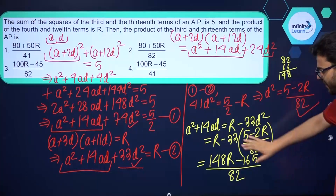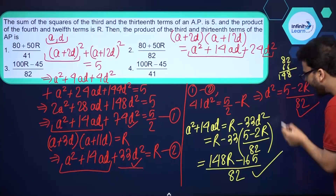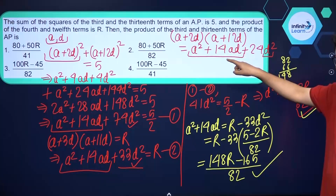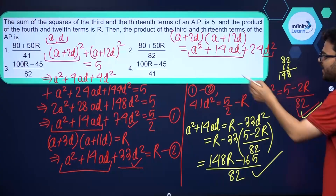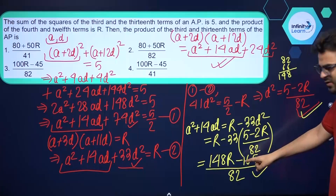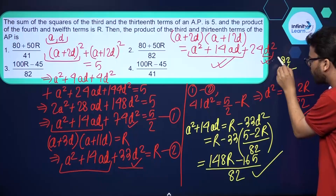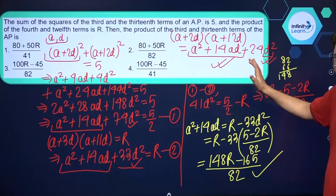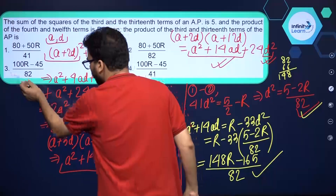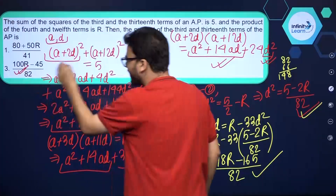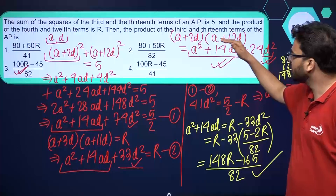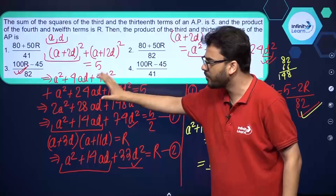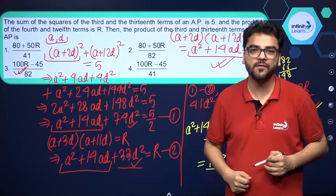We now have the value of A² + 14AD = (148R − 165)/82 and D² = (5 − 2R)/82. Substituting both into the target expression A² + 14AD + 24D²: the result simplifies to (100R − 45)/82. So the product of the 3rd and 13th terms of this AP is (100R − 45)/82.